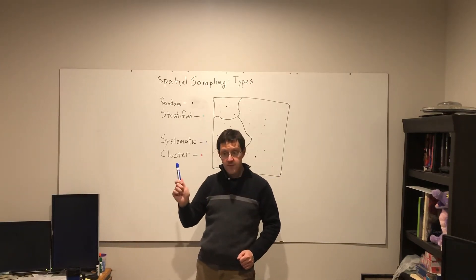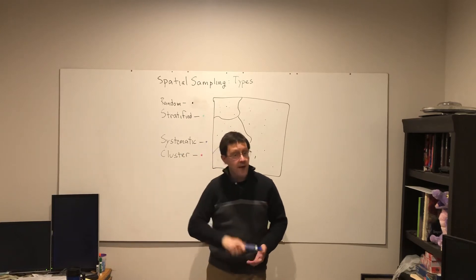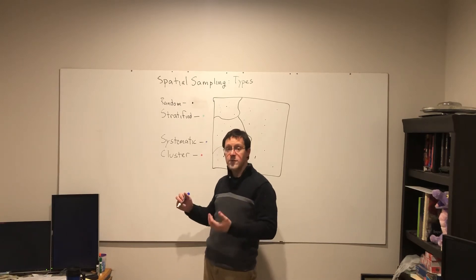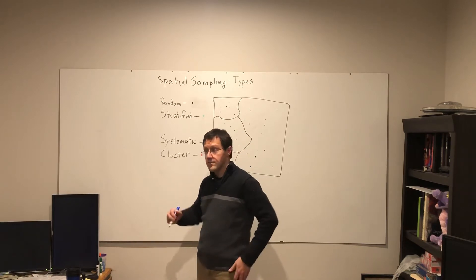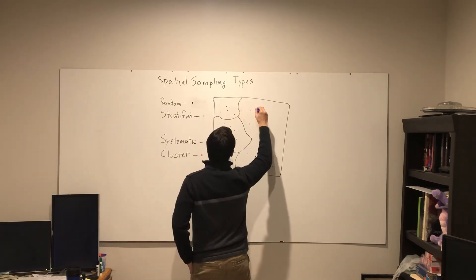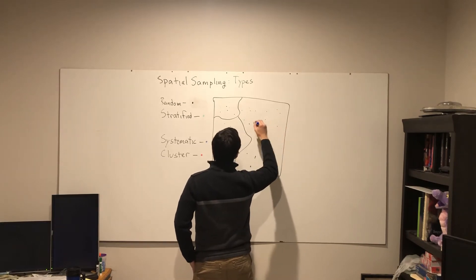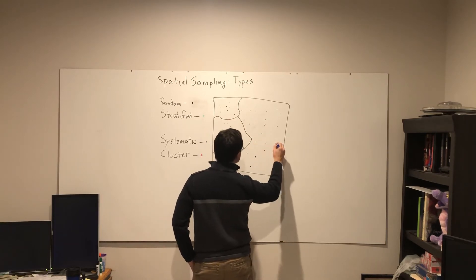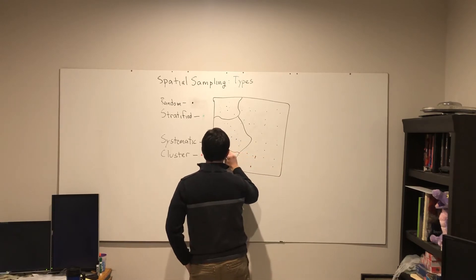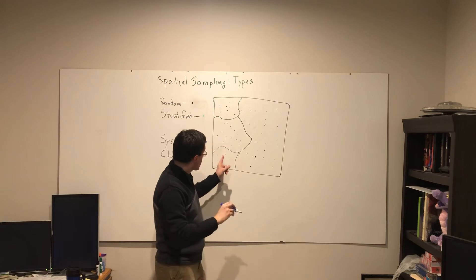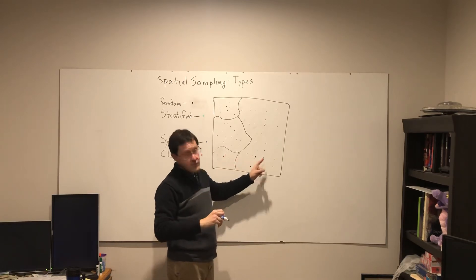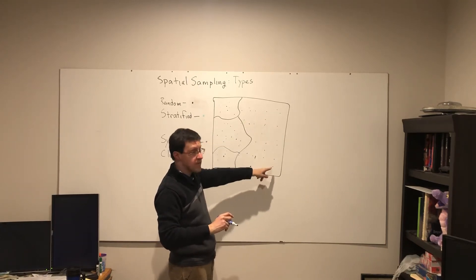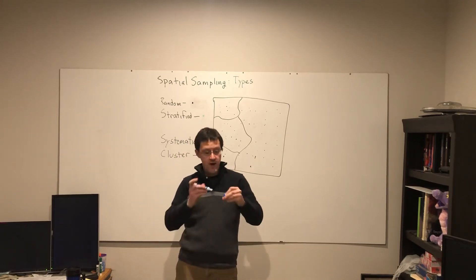The next would be systematic sampling. A spatial systematic sampling for points would be a regular grid. So I put down, in blue here, 20 points, the same size, but now they are arranged in four rows by five columns grid throughout this area.